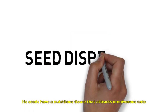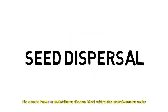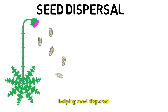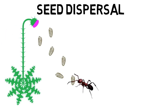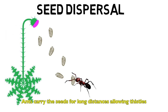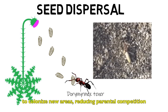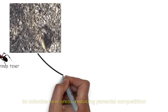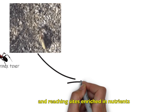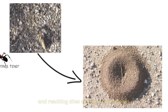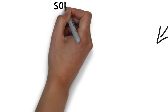Their seeds have a nutritious tissue that attracts omnivorous ants, helping seed dispersal. Ants carry the seeds for long distances, allowing thistles to colonize new areas, reducing parental competition and reaching nutrient-rich sites such as nests or refuse dumps.